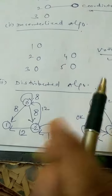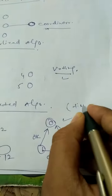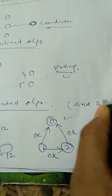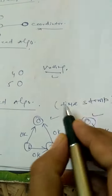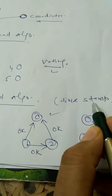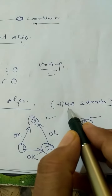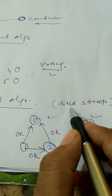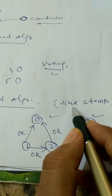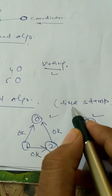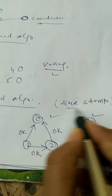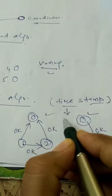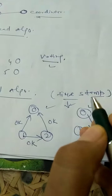In the distributed algorithm, the main factor is the timestamp. The process which has the lower timestamp is selected as the coordinator. So a lower timestamp means that process is the coordinator.